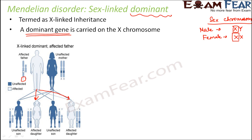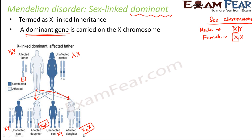Since this is sex-linked dominant inheritance, even if only one X chromosome is impacted, the person will have the disease — there is no concept of a carrier. If the father is X(A)Y and the mother is unaffected XX, then the sons will be XY and XY — unaffected. The daughters will be X(A)X, meaning they are not carriers but actually affected, because X(A) is a dominant gene. If even one X(A) is present, the dominant phenotype will be expressed and the person will have the disease.